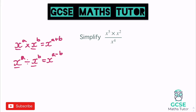Looking at this question, we've got a multiplication on the top, and remembering that the fraction line means divide, so we're dividing by x to the power of 4. Tidying up the top: x to the power of 5 multiplied by x to the power of 2, we add the powers to get x to the power of 7. That's all over x to the power of 4. Then subtracting: 7 take away 4 gives x to the power of 3. That's our final answer.